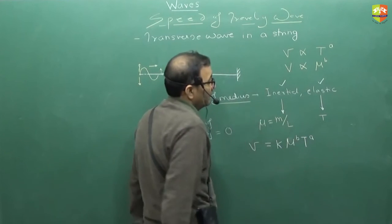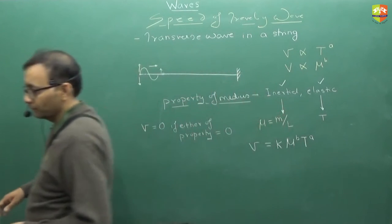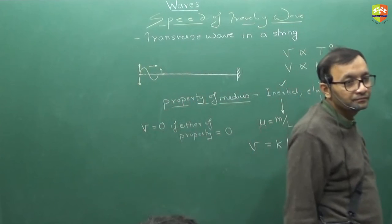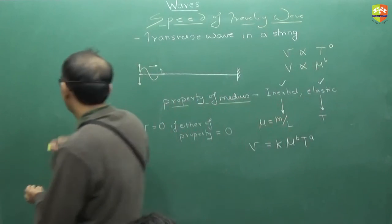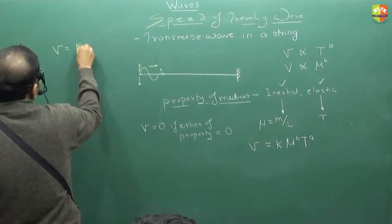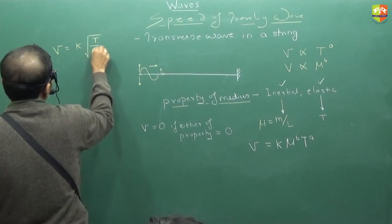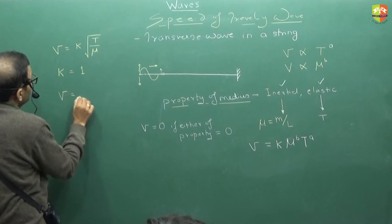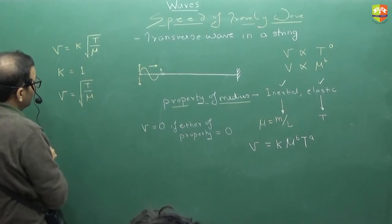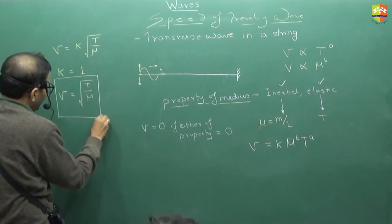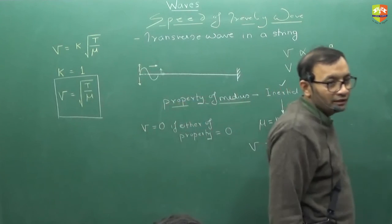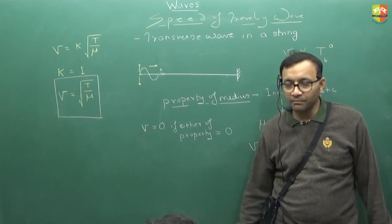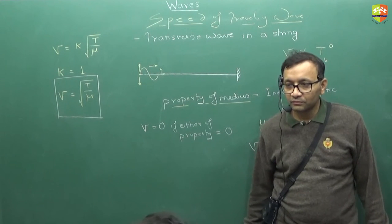Now using dimensional analysis, get me the value of a and b. Done. What is the value of a and b? A is half, b is minus half. So basically velocity comes out to be k under root t by mu. k is a dimensionless constant and the value of k comes out to be equal to 1. So v is equal to under root of T by mu. So velocity of the transverse wave on a string is given by this equation. It has nothing to do with the shape and size of the wave. It is fixed depending on what is the medium property. Understood? No doubts.